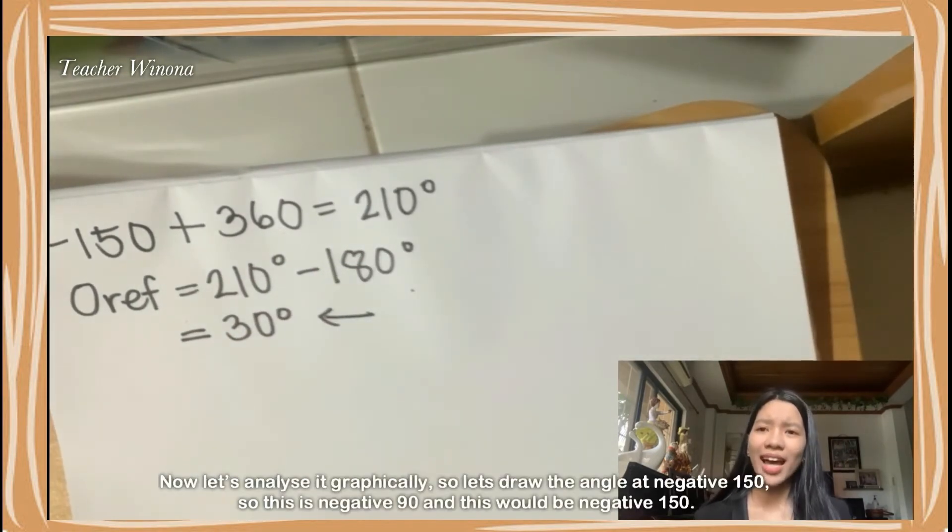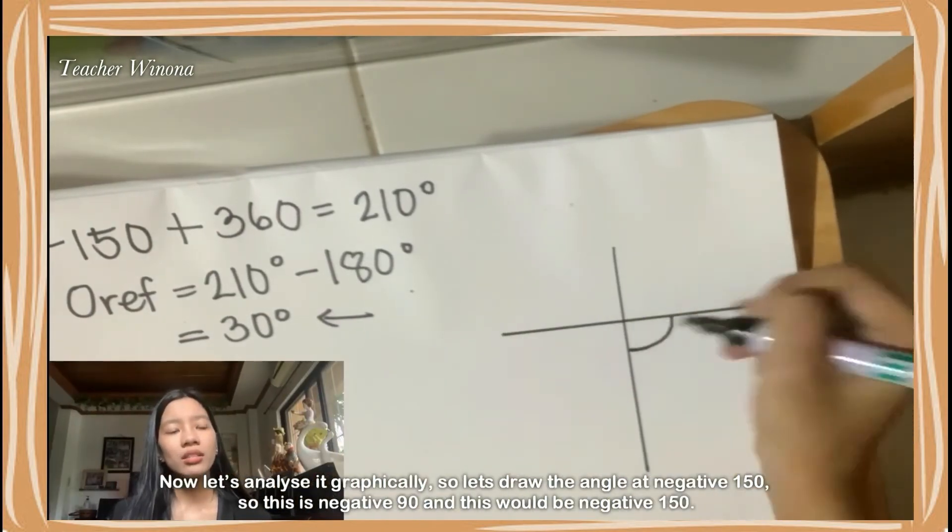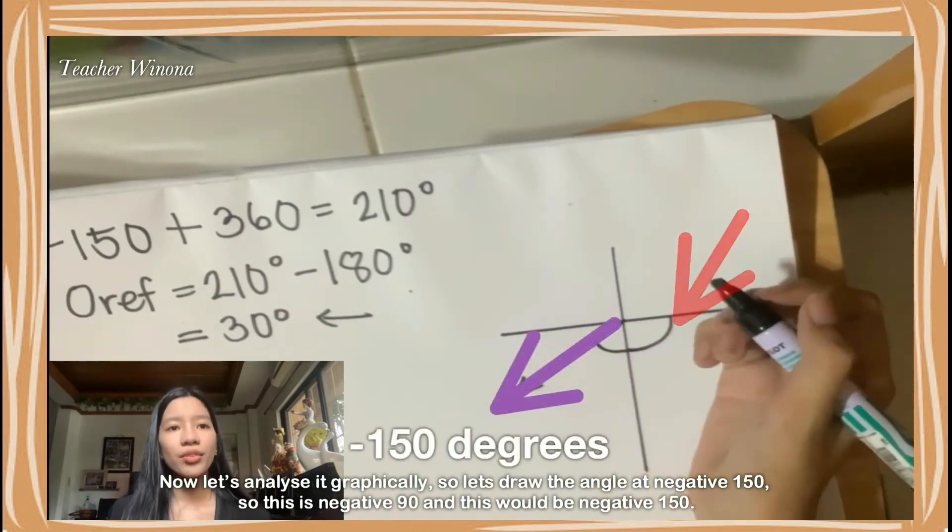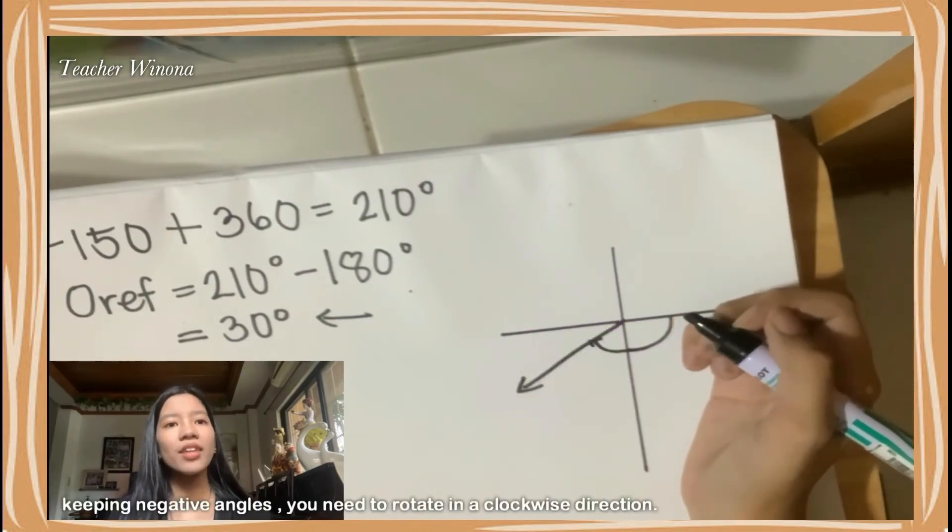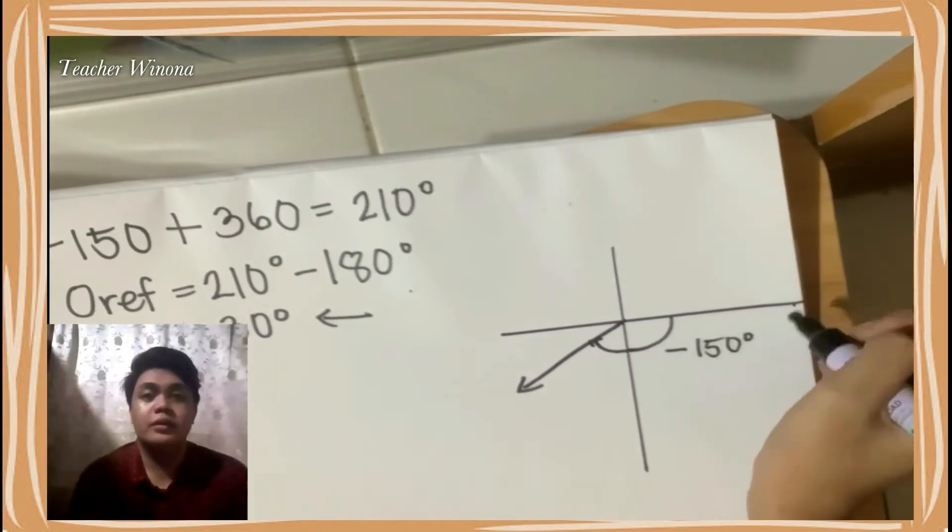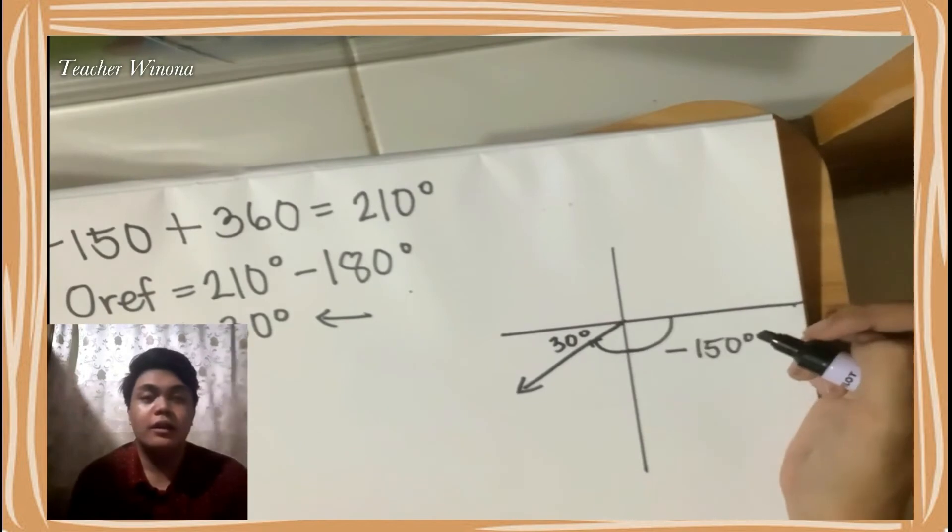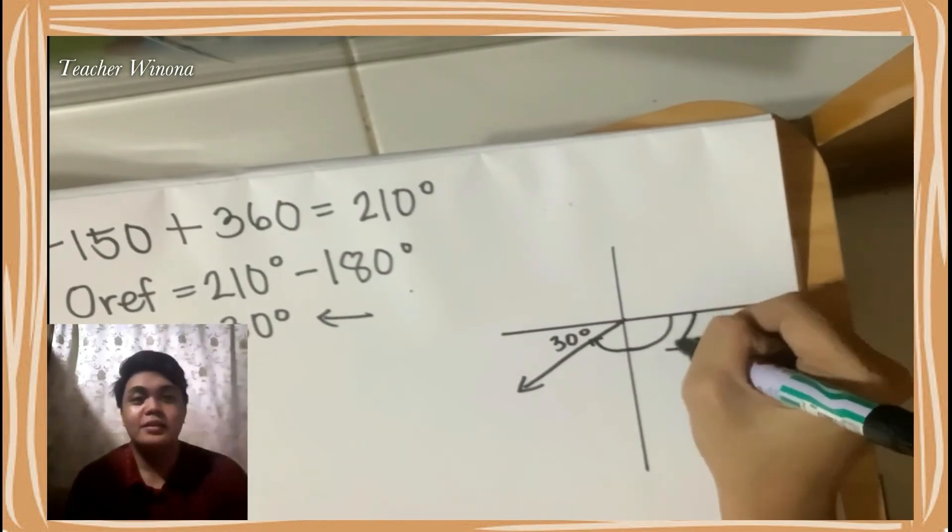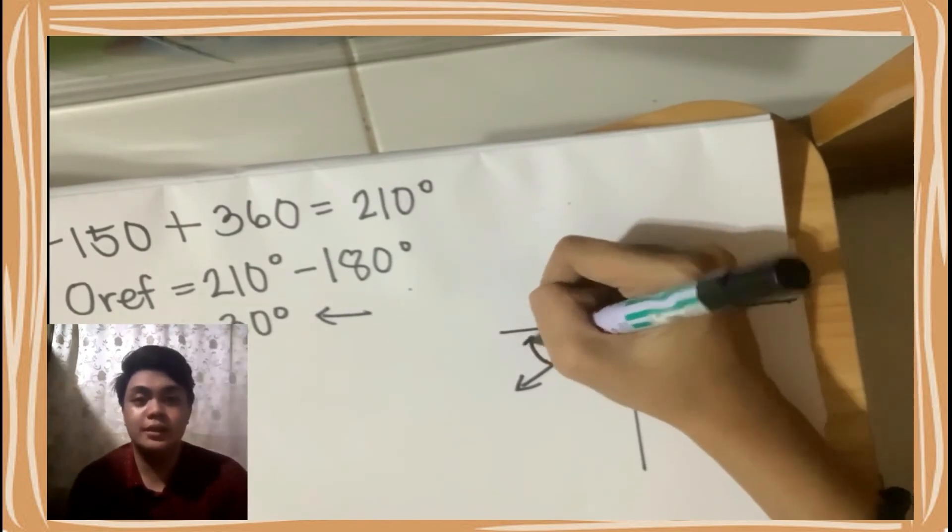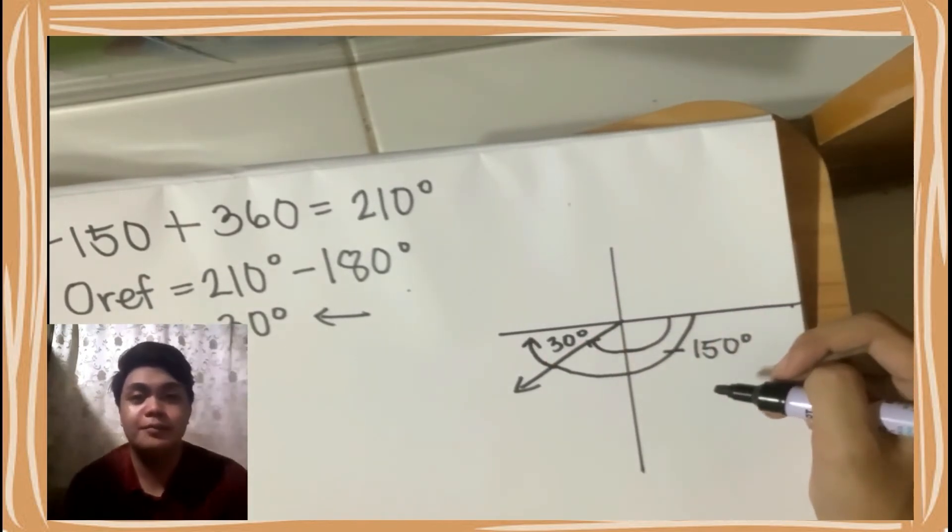Now, let's analyze it graphically. Let's draw the angle at negative 150. This is negative 90, and this would be negative 150. For negative angles, you need to rotate in a clockwise direction. We can clearly see that this angle has to be up to 180 degrees so that we can easily see the answer graphically.